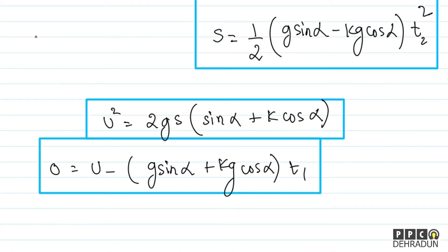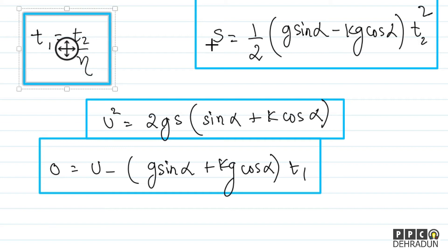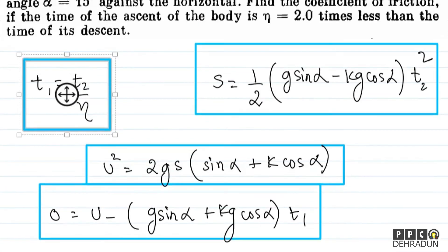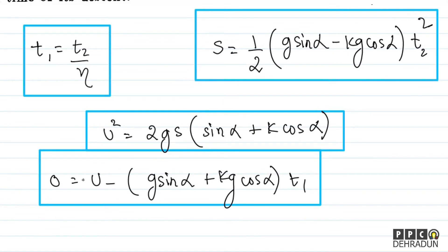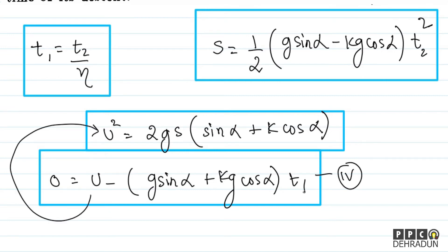Besides this, we have another equation: t1 = t2/eta. So t1 is less than t2. Now we need to find the friction coefficient k. My idea is: from the fourth equation, I get u; substituting u into the other equation gives me an expression in t1 squared.